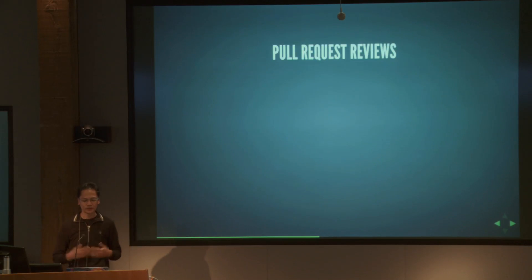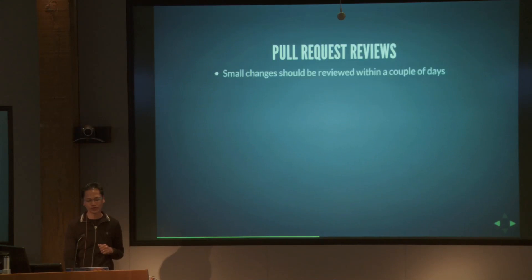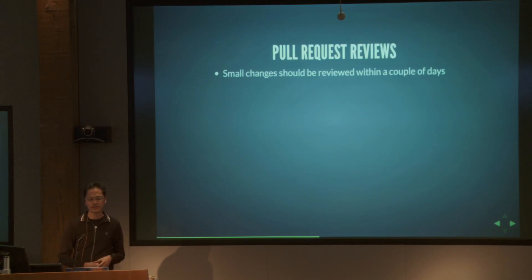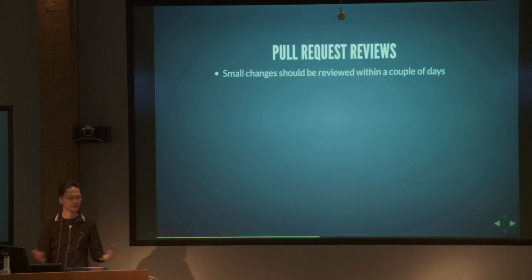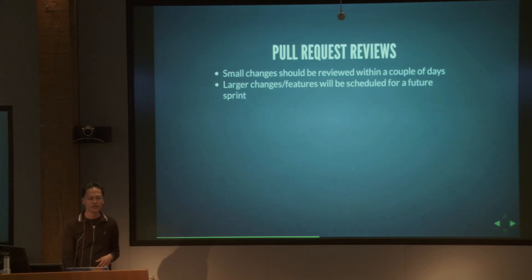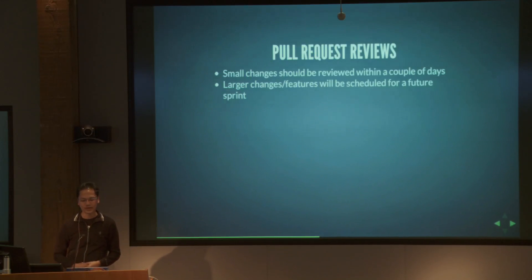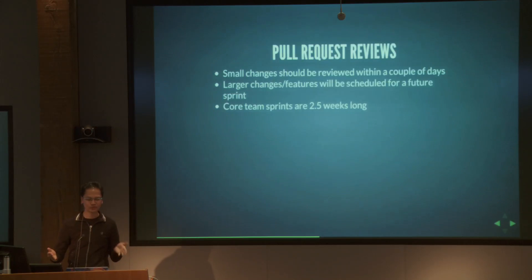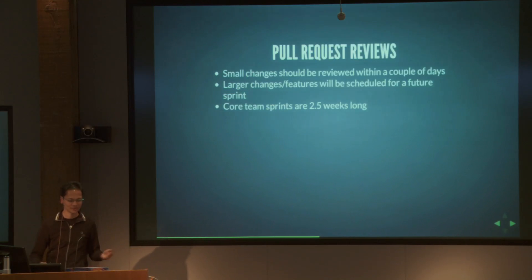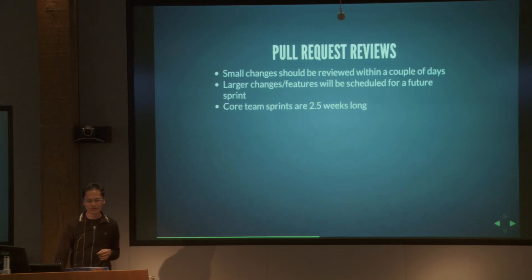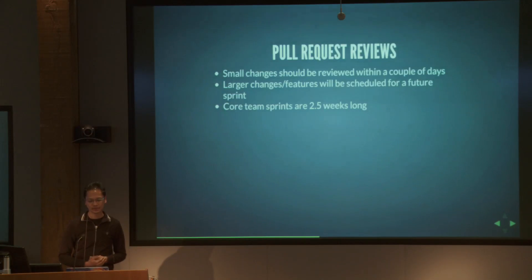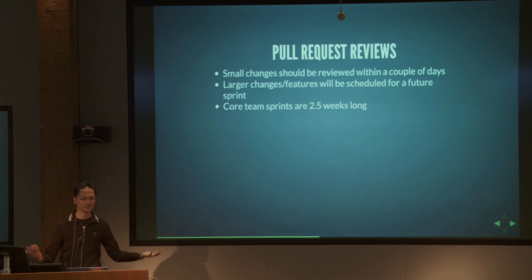In terms of pull requests, if you put one up for a bug fix or new feature, the core Brackets team will try to get to small pull requests relatively quickly. If you have a larger change or big feature, we need to work that into our sprint schedule. We work in fairly short two-and-a-half week sprints, and we'll schedule your larger pull request for a future sprint — it shouldn't be too long given how short our sprints are.